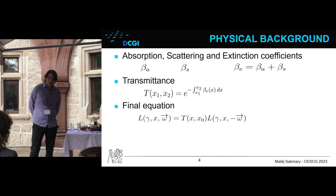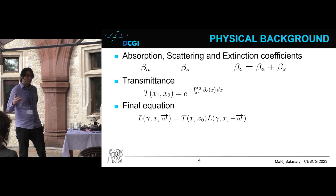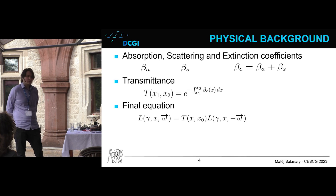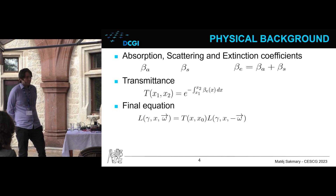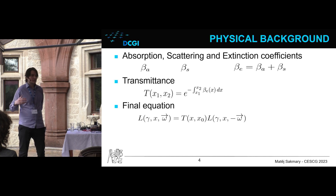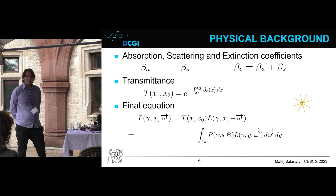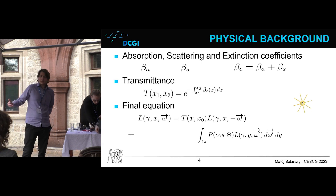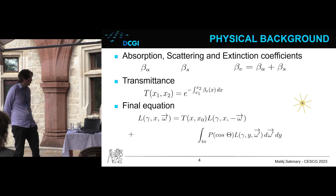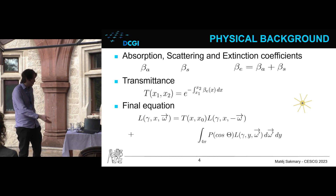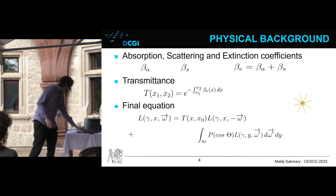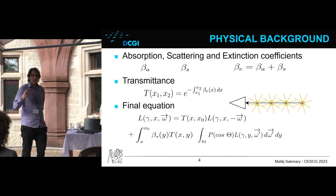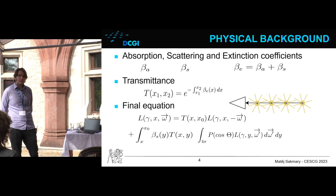Using this, we can start to model our final equation. We want to get the light arriving into some point x from direction omega. We take the light which arrives there and multiply it by the transmittance between point x and x0, the origin of our path. However, we also need to account for in-scattering: when a photon is out-scattered from one path, it gets in-scattered into another. To get the amount of in-scattered light at a single position, we integrate the entire sphere of directions, weighted by a phase function p, since not all particles scatter uniformly — for example, a water droplet scatters strongly forward. We integrate again along the path, weighted by the scattering coefficient and transmittance, to arrive at the final form of our rendering equation.